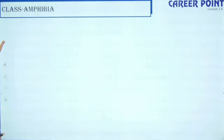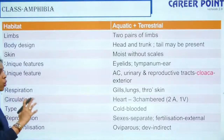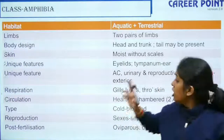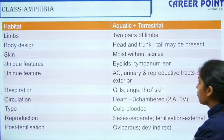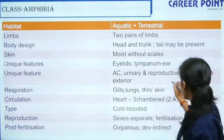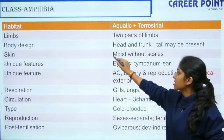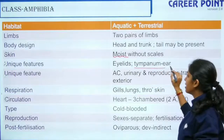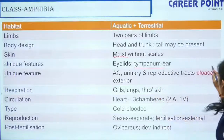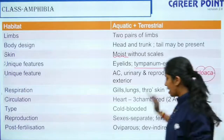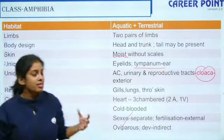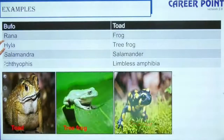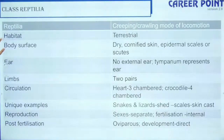Moving to those with jaws and limbs — Class Amphibia. In Amphibia, the skin is moist without scales. They have a tympanum, which is the eardrum. They have a cloaca and they are oviparous — they lay eggs. There are many examples in this class.